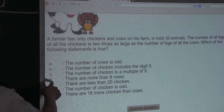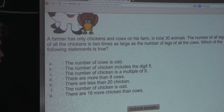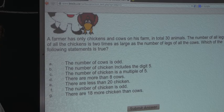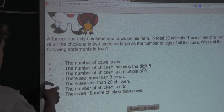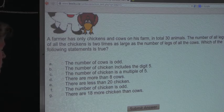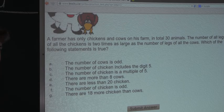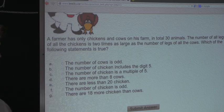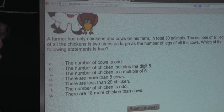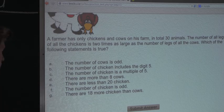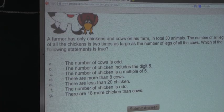Now let's look at D. There are more than eight cows. Well this is false because we know that there are only six cows. Option E states there are less than 20 chickens. This is false because we know that there are 24 chickens. Option F states the number of chickens is odd. This is false because we know that 24 is even. And finally option G states there are 18 more chicken than cows.